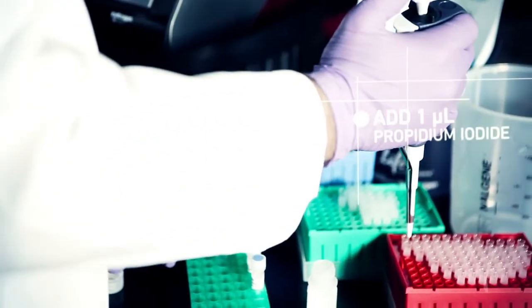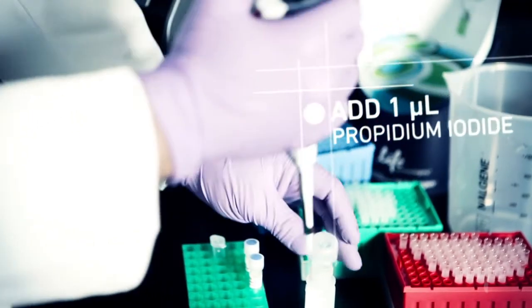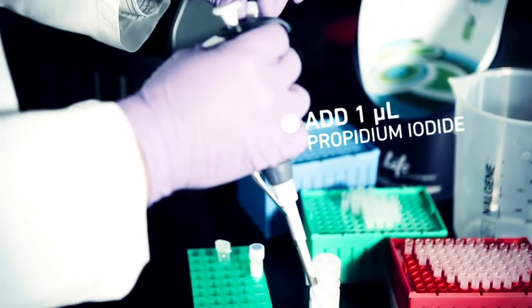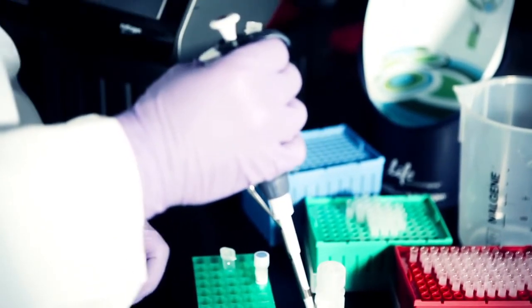Add 1 microliter of Propidium Iodide. This will allow Tally to distinguish dead cells from the apoptotic cells.